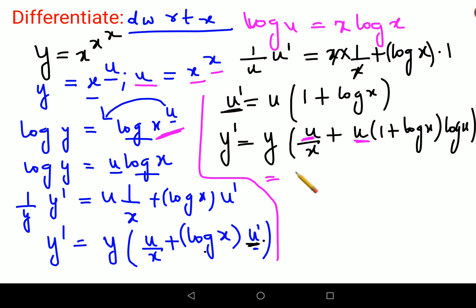Now if you see clearly, u is common in the bracket, so let's take it out. You will have y u times (1 upon x plus - let's multiply this - log x plus log x into log x, which gets you log x squared). But please understand, you still have to write down your final answer in terms of just x, not y and u - that is absolutely not allowed or that's discouraged.